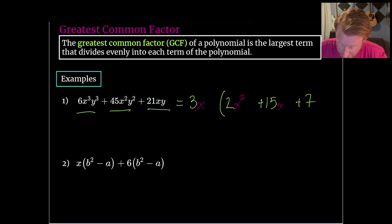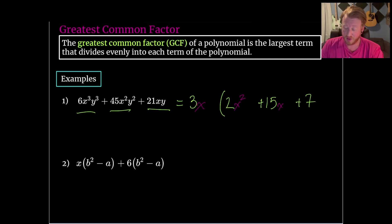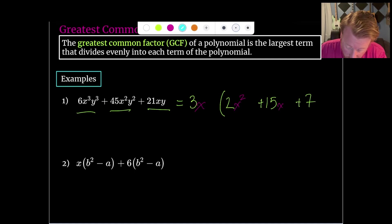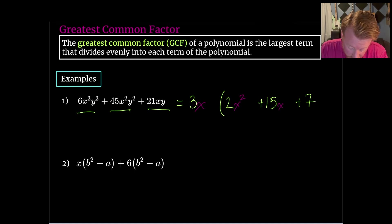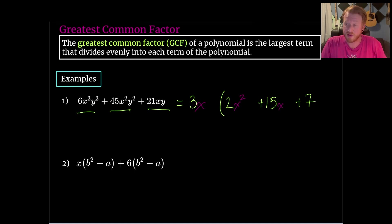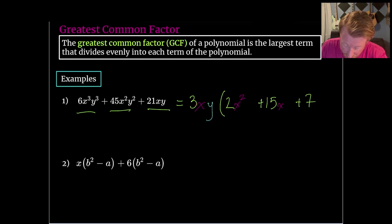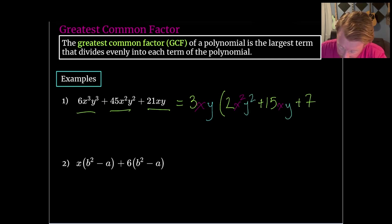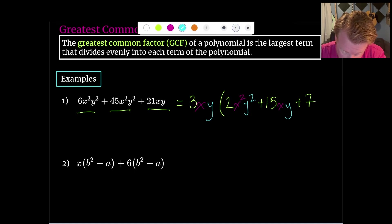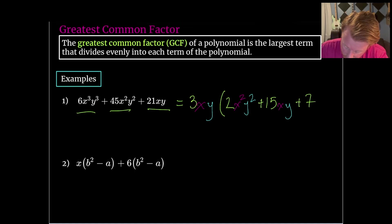x times x² gets us back to that x³. For the next term, I need to multiply just an x by that first x to get back to x². And then I've pulled out all of the x's from the last term, so nothing to write next to the 7. Now we focus on the y term. There are three y's in the first term, two y's in the second, and one y in the last one. So again there's only one y that we can pull out. We will pull that y out and think about what's left behind.